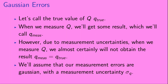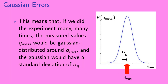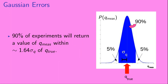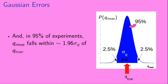We'll assume that our measurement uncertainties are Gaussian, with a measurement uncertainty sigma_Q. This means that if we did the experiment many, many times, the measured values Q_measured would be Gaussian distributed around Q_true, with a standard deviation of sigma_Q. In particular, Q_measured would fall within the range Q_true minus sigma_Q to Q_true plus sigma_Q in about 68% of experiments. 90% of experiments will return a value within about 1.64 sigma_Q of Q_true, and in 95% of experiments, Q_measured falls within about 1.96 sigma_Q of Q_true.